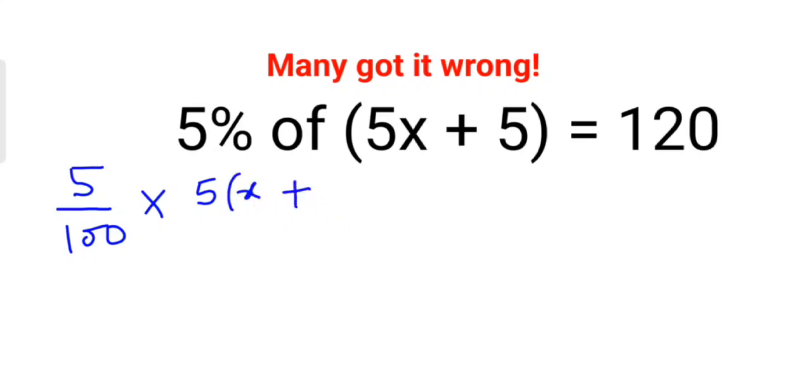So instead of that let's do it this way: 5 times (x + 1). I can take both of these 5s outside. Right. And this is equal to 120.